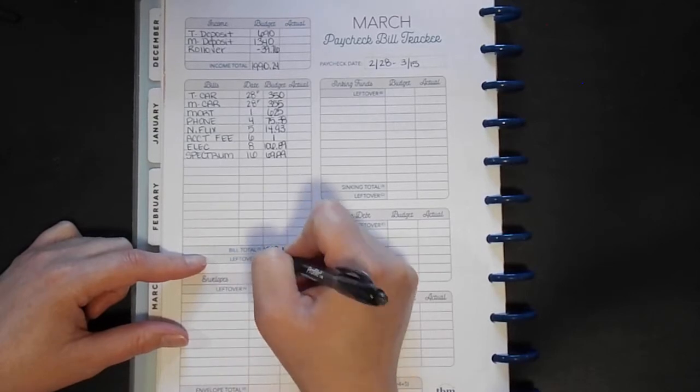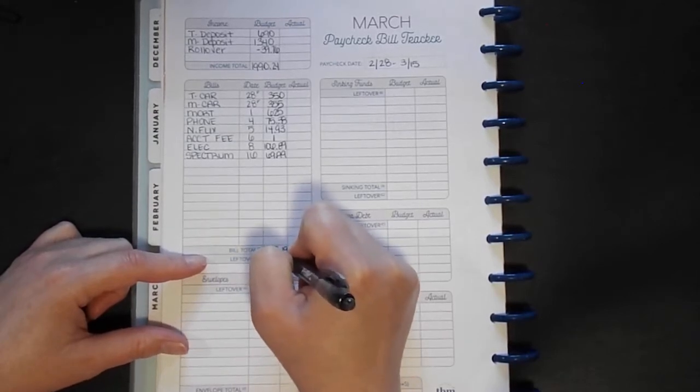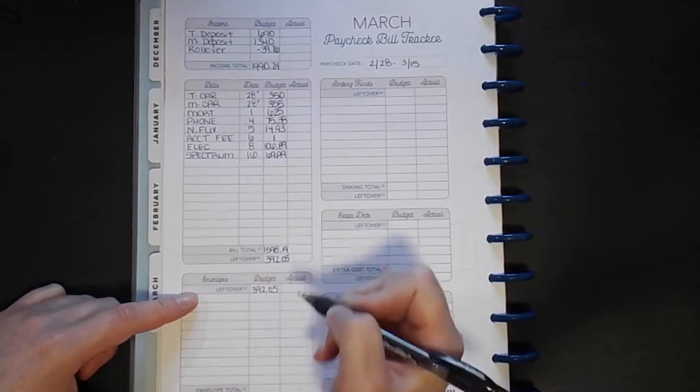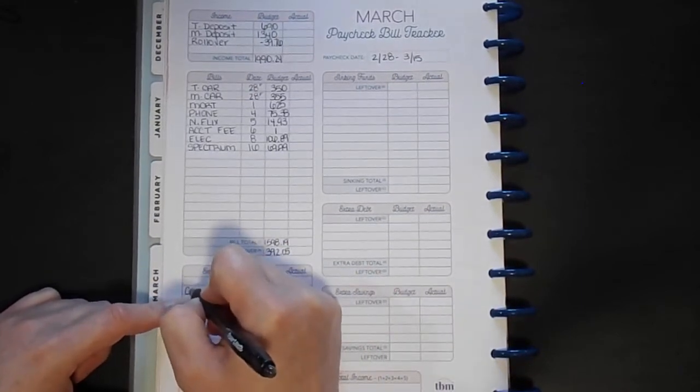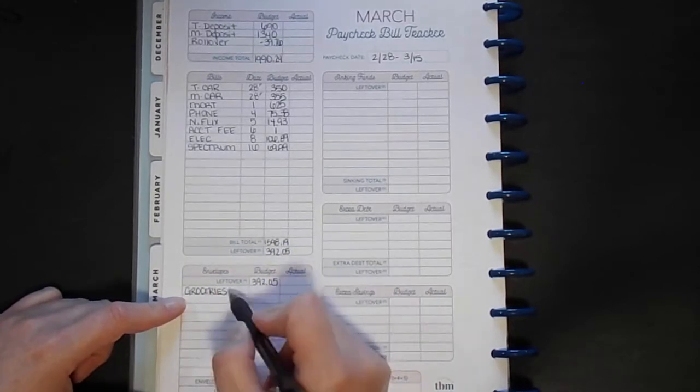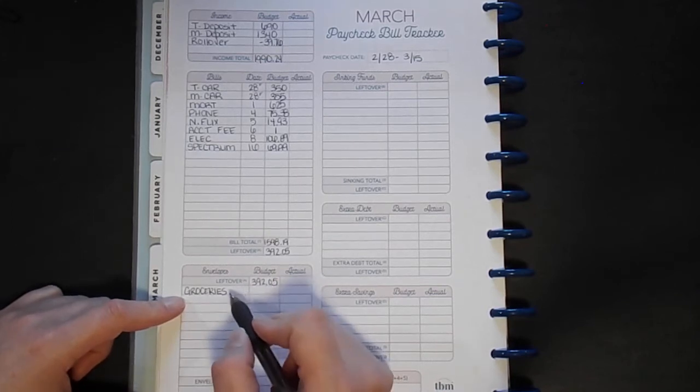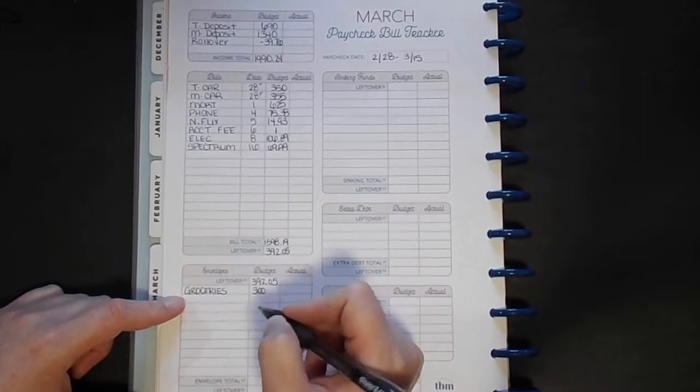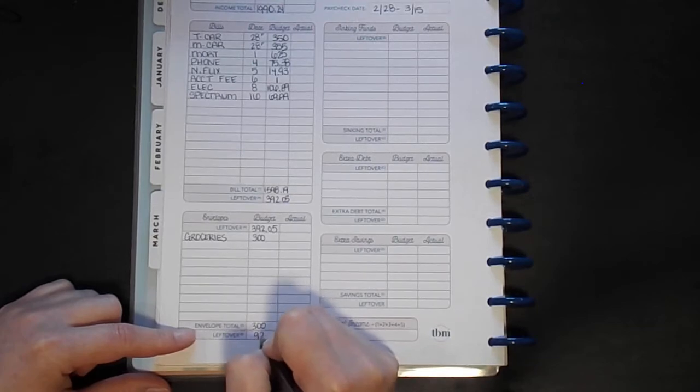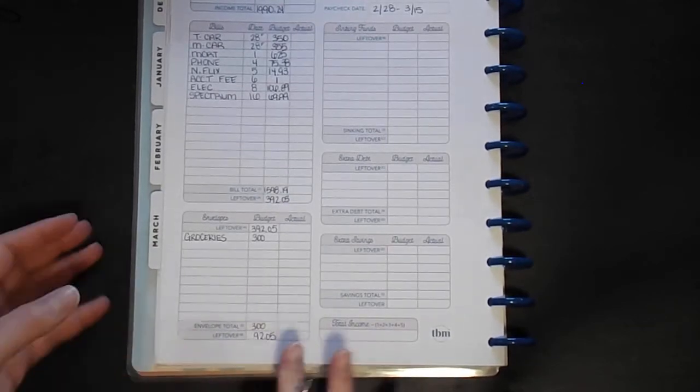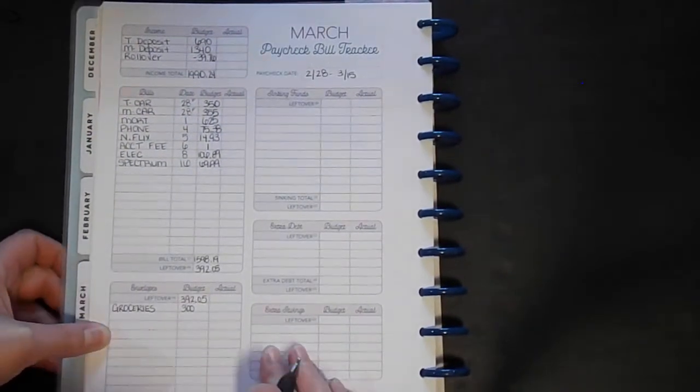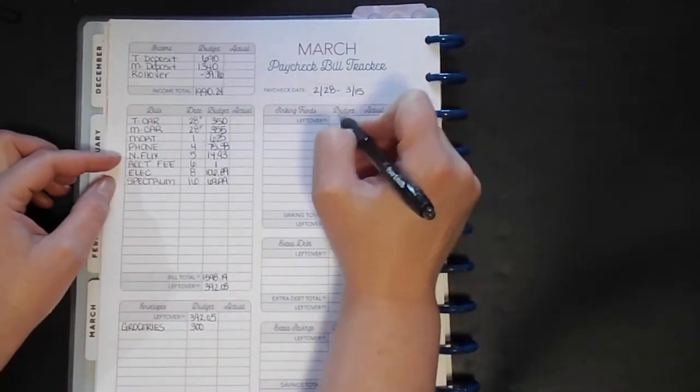Giving us a leftover of $392.05. So I'm going to carry that on down. And out of that, we'll take our groceries, and this also includes household and eating out. So it's $300 for the first half of the month, which will leave me $92.05. Make sure you guys can still see. Yeah, so $92.05.